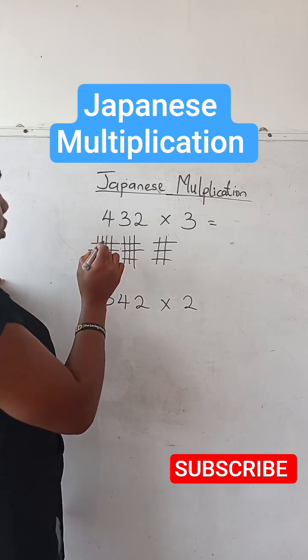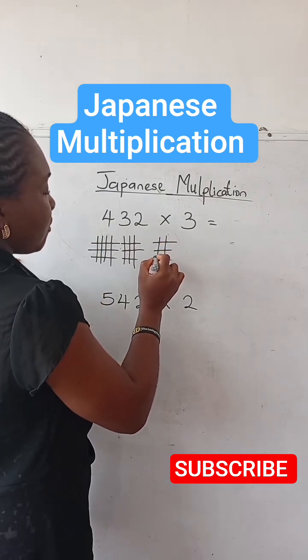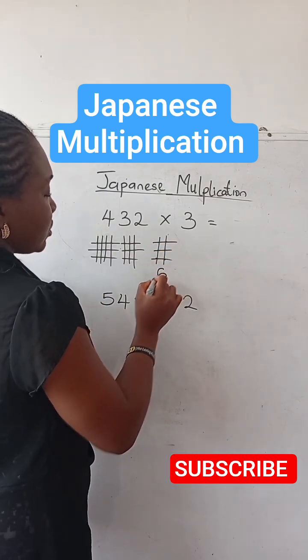So we're going to count all the points. 1, 2, 3, 4, 5, 6. You have your 6.